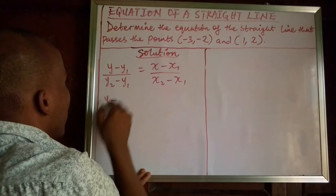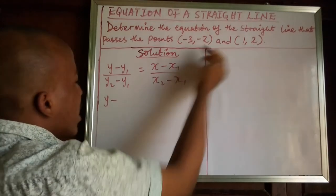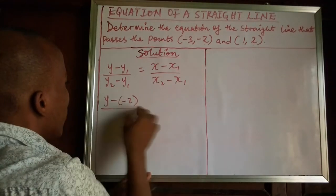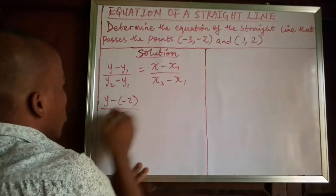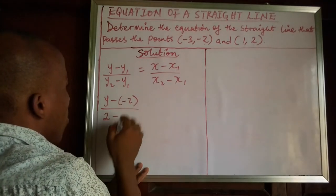So we have it as y minus, what is y1 for me? y1 is negative 2 divided by, what is y2? y2 is 2 minus y1 which is negative 2.